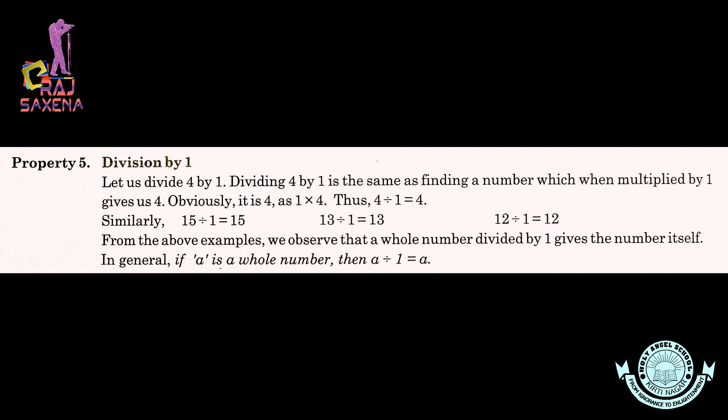Now students, let us move on to the next property — property number 5, which is Division by 1. Agar hum kisi bhi whole number ko 1 se divide karte hain toh uska result vahi whole number hota hai jisko 1 se divide kiya gaya hai. For example, 4 divided by 1 gives 4; 15 divided by 1 gives 15; 13 divided by 1 gives 13; 12 divided by 1 gives 12. In general, if A is a whole number then A divided by 1 always gives A.